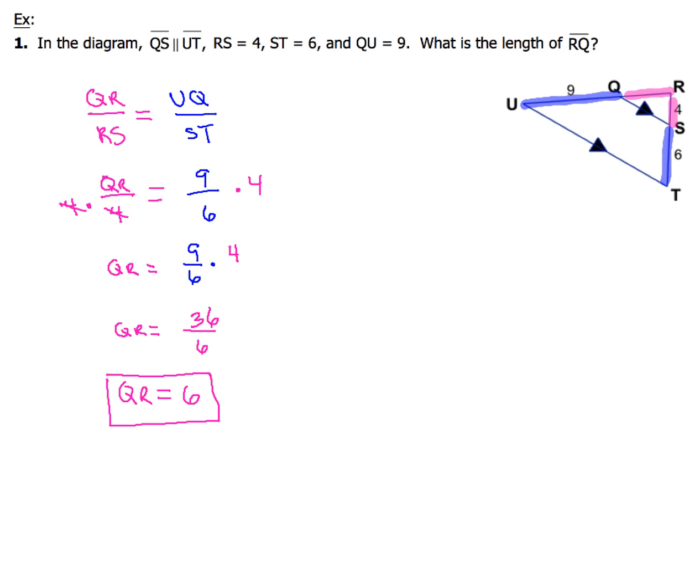So there we go. We have our first part of our equation, QR over 4 equals 9 over 6. So when you notice that there's a 4 on the bottom of QR in that denominator, all you're going to do is multiply both sides by 4. If you multiply that side by 4 and multiply this side by 4, these 4s here will cancel out, and then you'll just be left with QR on the left-hand side. And then on the right-hand side, 9 times 4. Remember, this 4 on the right-hand side is like 4 over 1. So when you multiply that across, 9 times 4, you'll end up with 36, and then 6 times 1 on the bottom gives you just 6. When you reduce that, you end up with QR equals 6.